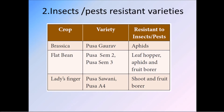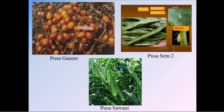Insect and pest-resistant varieties: Brassica variety Pusa Gaurav is resistant to insect pests like aphids. Flat bean varieties Pusa Sem 2 and Pusa Sem 3 are resistant to insects/pests like leaf hopper, aphids, and fruit borer. Lady's finger varieties Pusa Sawani and Pusa A4 are resistant to shoot and fruit borer. You can see Pusa Gaurav, Pusa Sem 2, and Pusa Sawani lady's finger here.